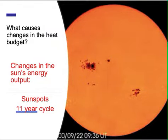Let's focus now on greenhouse conditions and what causes the Earth to heat up. From a heat budget standpoint, if more heat is coming in than going out, the Earth heats up. If more heat goes out than comes in, the Earth cools down. And if the heat coming in and going out are balanced, the climate will be fairly stable.